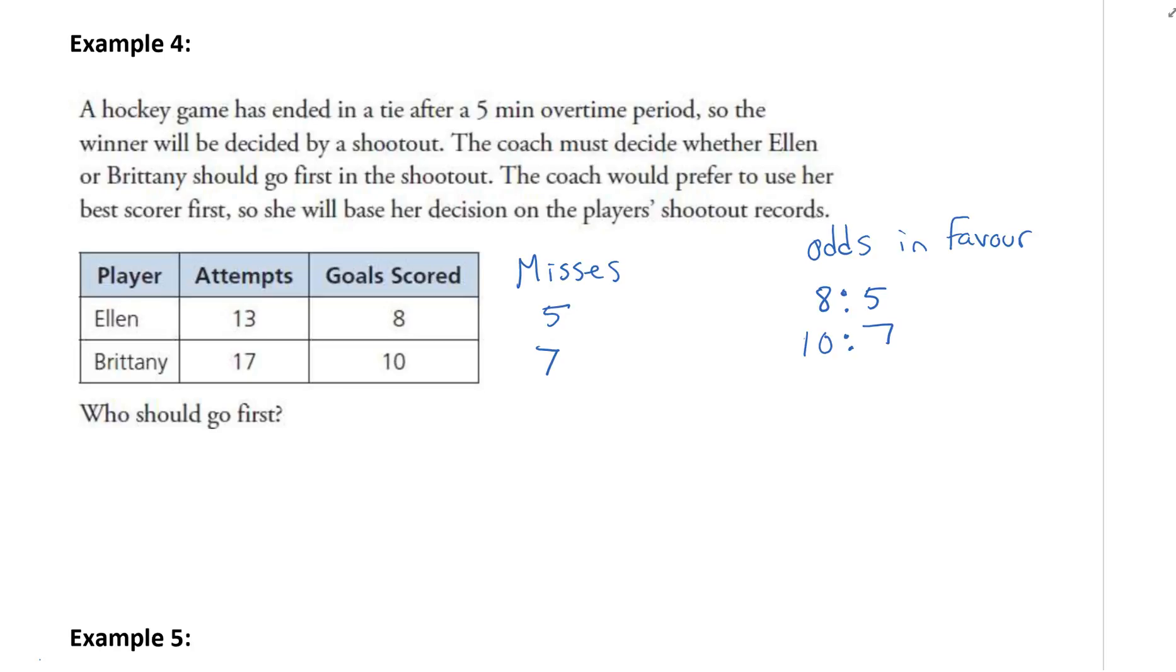We can do this in probability. The probability of choosing Ellen would be 8 out of 13. The probability of choosing Brittany would be 10 out of 17. Then changing those to percentages: 61.5% and 58.8%. Those are much easier to compare. Even 8 out of 13 and 10 out of 17 are hard to compare.